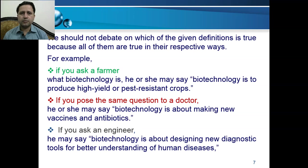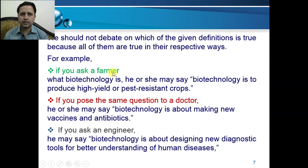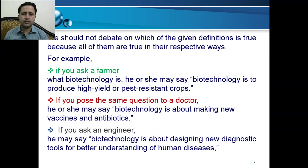We should not debate on which definition of biotechnology is correct because all definitions are true in their respective ways. For example, if we ask a farmer, he or she may say biotechnology is to produce high-yield or pest-resistant crops. A doctor may say biotechnology is to make vaccines, antibiotics, and insulin. An engineer may say biotechnology is designing new diagnostic tools for better understanding of human beings. All definitions are valid in their own respective ways.